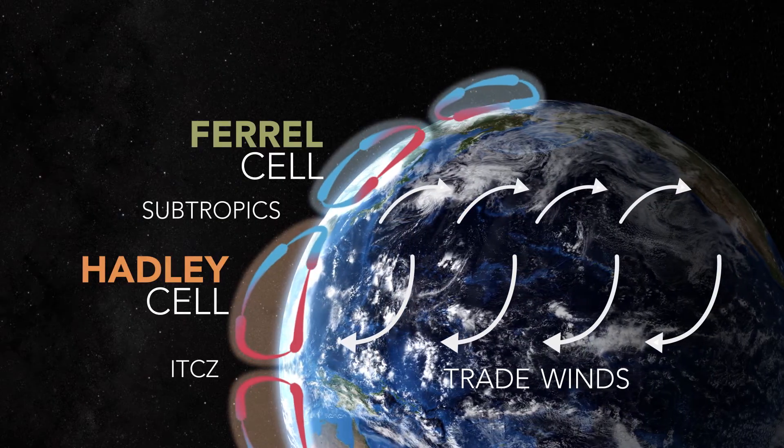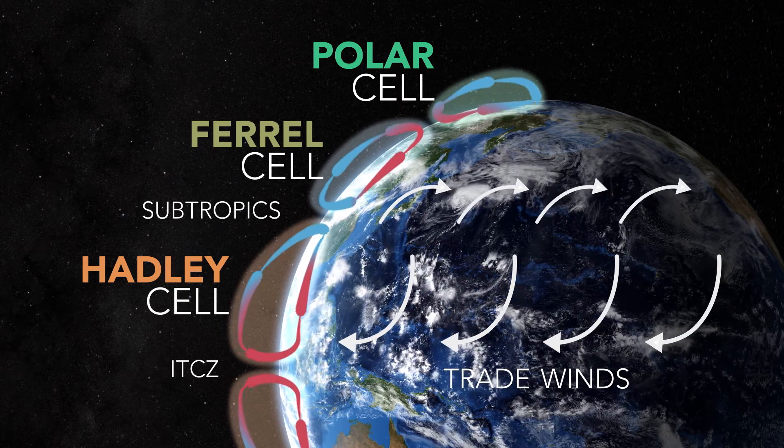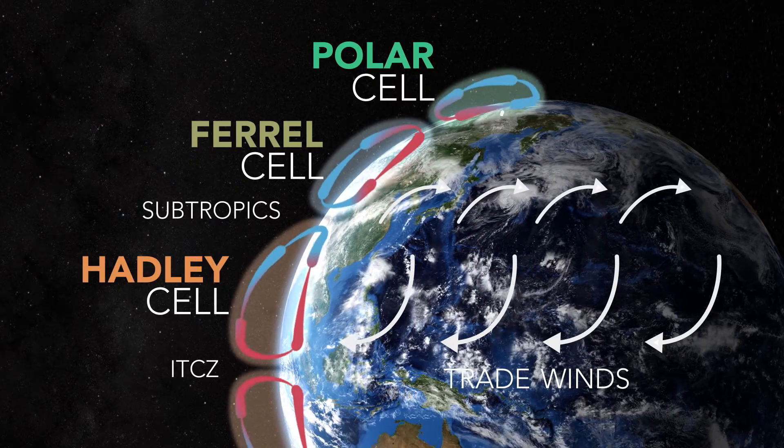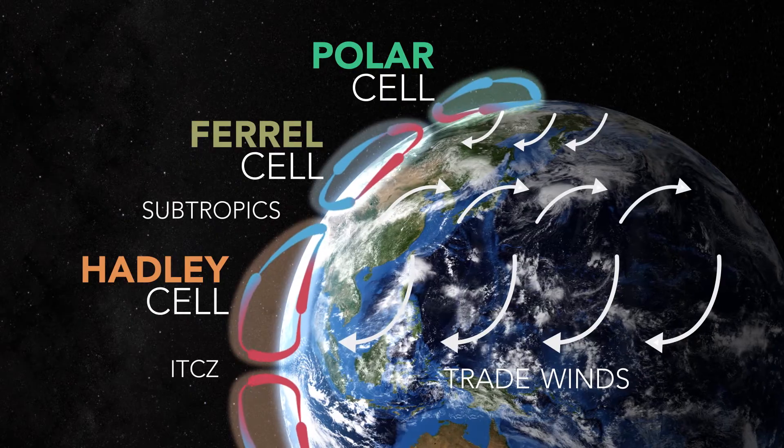The third cell, at the poles, is called the polar cell. This is the smallest and the weakest of the three cells in the atmosphere. Air in these cells sink over highest latitudes, and flows towards the lowest latitudes at the surface.